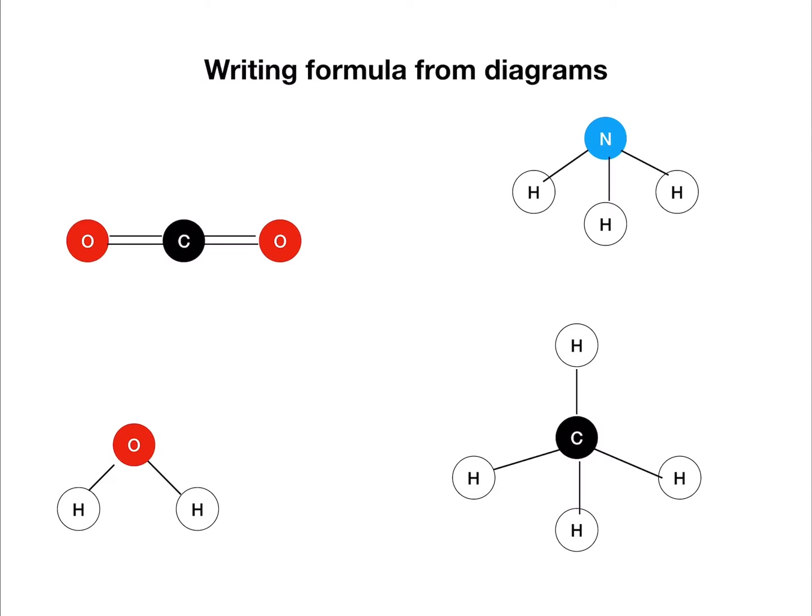First we're going to look at writing formulae from diagrams. When we do this, we look at the elements present, count up how many of each there are, and write them with a subscript number.